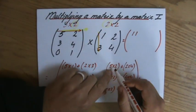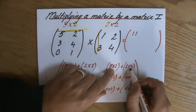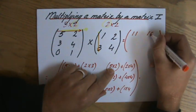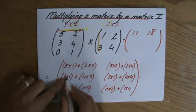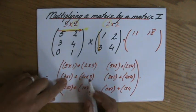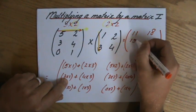5×1 is 5, plus 2×3 is 6, so 5+6 - I'll put an 11 there. 5×2 is 10, plus 2×4 is 8 - 10+8 is going to be 18. 3×1 is 3, plus 4×3 is 12 - 3+12 is 15.